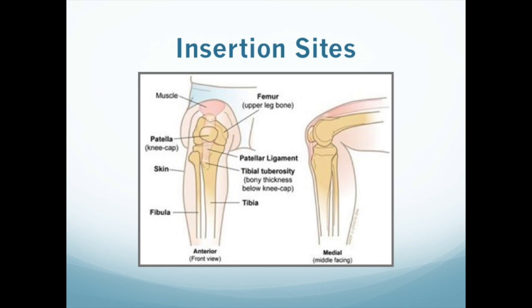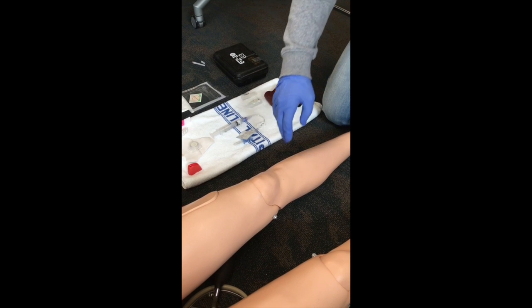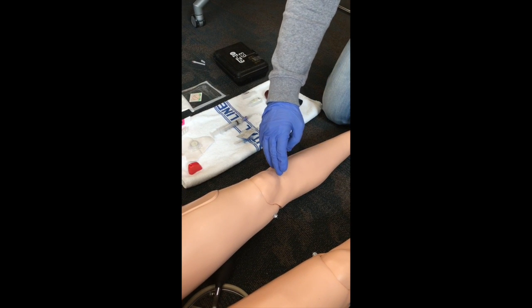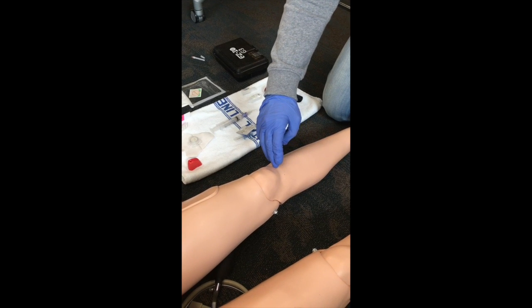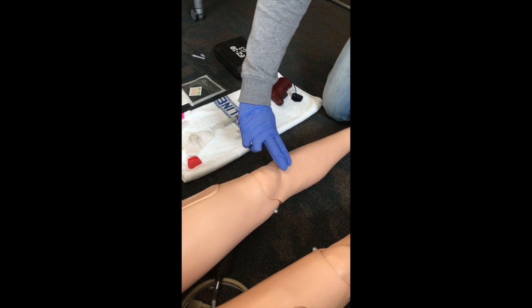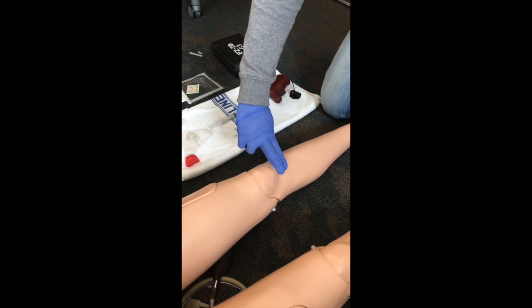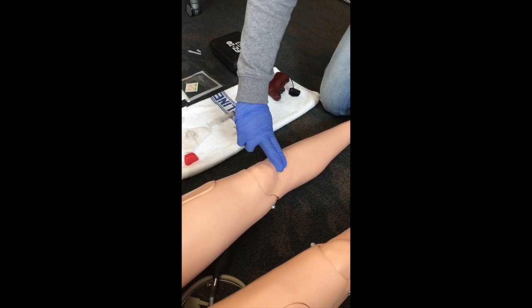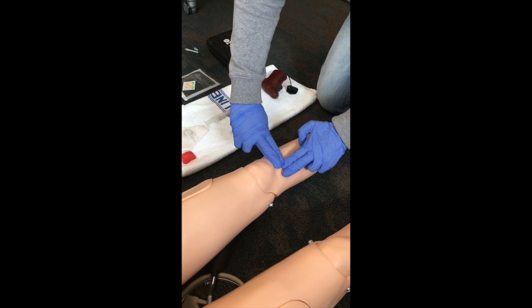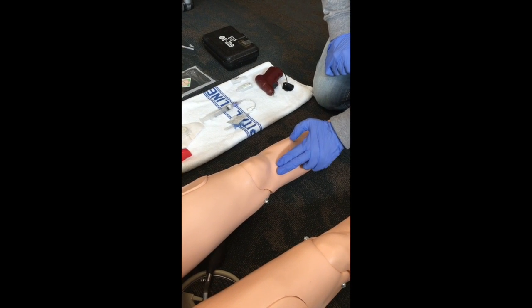Our final insertion point is the proximal tibia. This is located three centimeters below the patella and one to two centimeters medial to the tibial tuberosity. This is the location we're going to be demonstrating today.